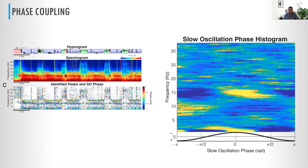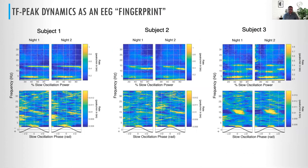Doing the same thing with slow oscillation phase, we can make a graphic where, across an entire night, every time-frequency peak is plotted as a function of phase and frequency. We get these clear bumps and modes. There's a mode at zero around 15 Hz that corresponds with the fast spindle band, and a mode around eight to ten Hz at near plus or minus pi, corresponding with slow spindles. We can now look at these across subjects.